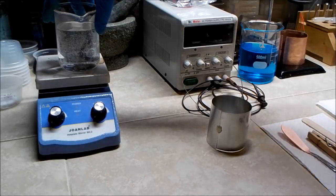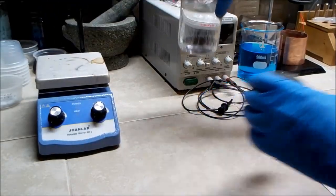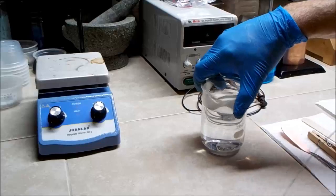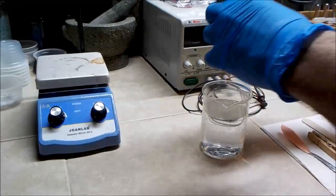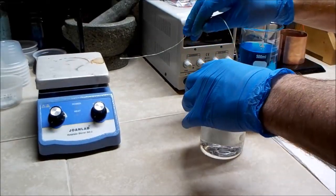After removing the stir bar, I then place a zinc anode into the beaker. The anode has a wire attached the same way as previously described for the copper anode.